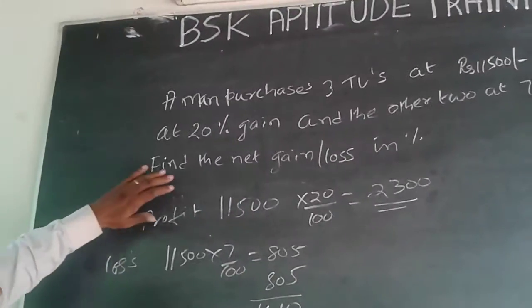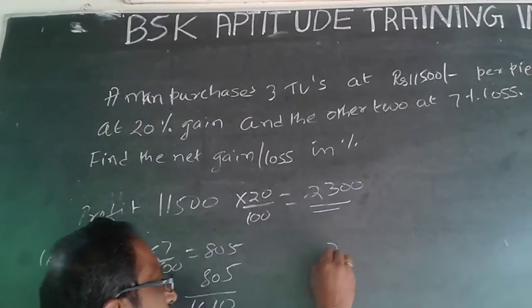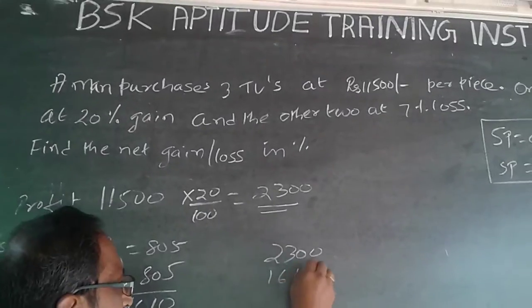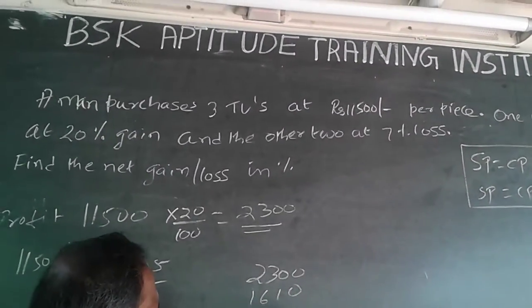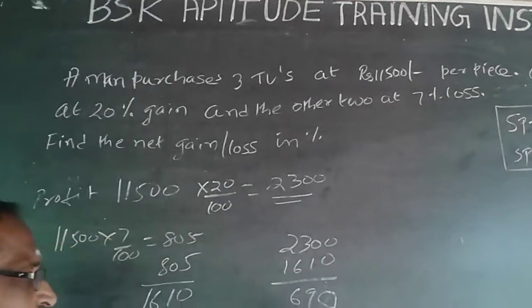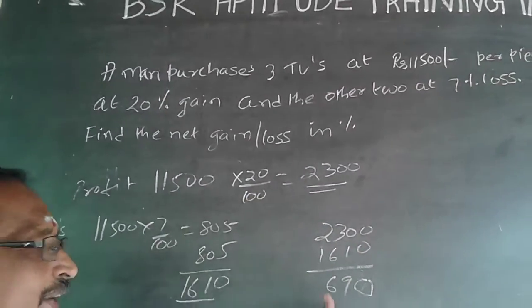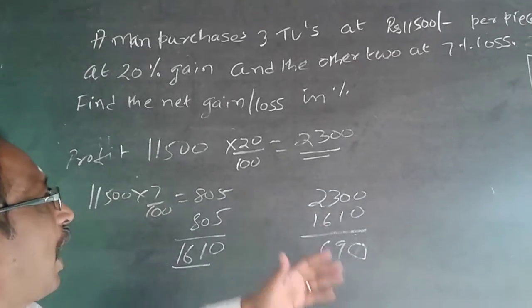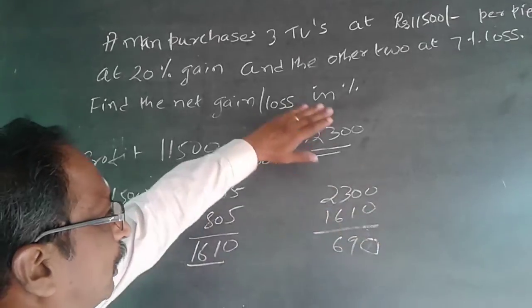But the question is, find the net gain or loss percentage. So, it will be from 2,300 deduct this 1,610. So, the net gain or loss, here it will be net gain. It is 690. Net gain is 690 because profit value is more than the loss value. So, it is making a profit. Now, they ask for the profit gain in percent. Now, the profit value is not being asked. It is also in percentage.